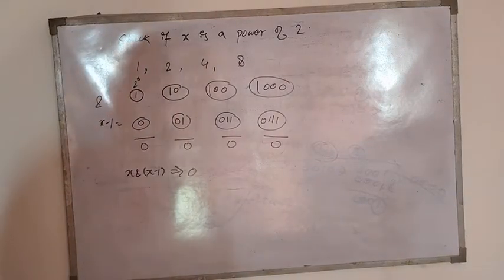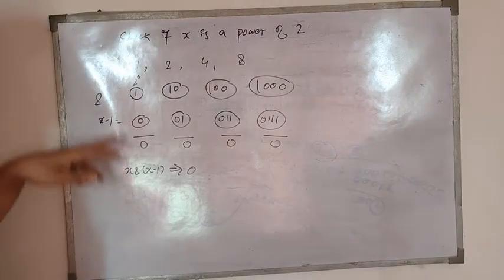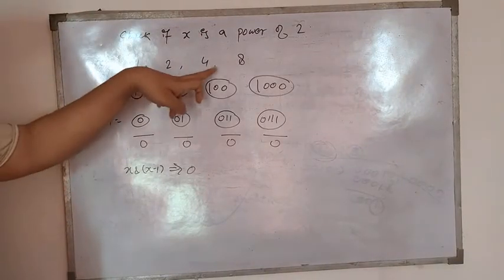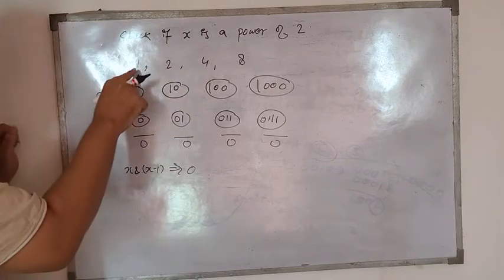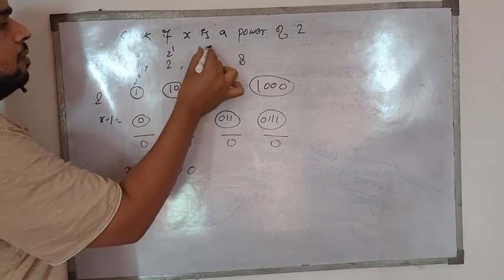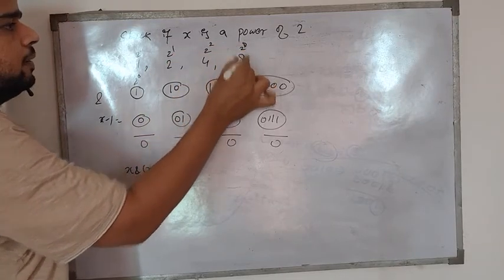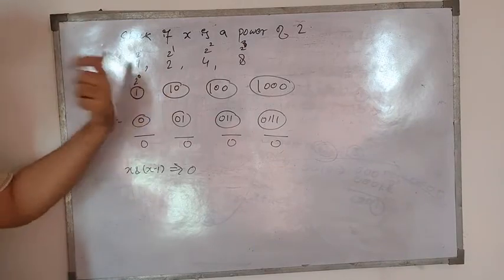Today we'll check if x is a power of 2 in binary. So how do we check that? Let's say if x is 1, 2, 4, and 8 - these all numbers are powers of 2. This is 2 to the power of 0, power of 1, power of 2, and power of 3. So now I need to check if any number is a power of 2.